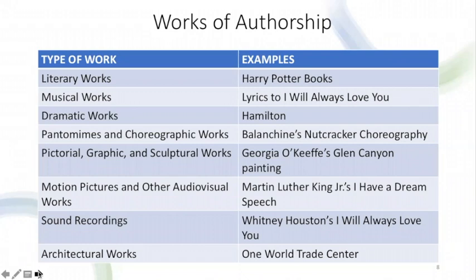Pictorial, graphic, and sculptural works are what most would call fine arts, including paintings, photographs, and sculptures — think of Georgia O'Keeffe's Glen Canyon painting. Motion pictures and audiovisual works include movies and any type of work that includes graphics and accompanying audio synced together, such as the Disney movie Coco. Sound recordings are basically any type of audio recording, whether a particular recorded song, a recorded speech, or recordings of natural sounds — Whitney Houston's recording of 'I Will Always Love You' and Martin Luther King Jr.'s 'I Have a Dream' speech are both examples. Architectural works protect unique and distinct architectural designs, such as the One World Trade Center in New York City.